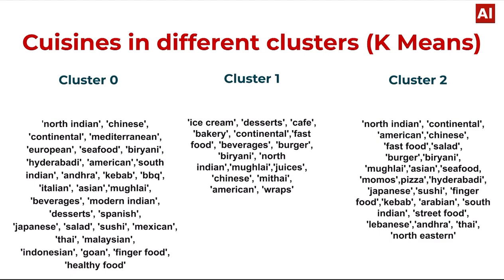Cuisines in different clusters: There are three clusters made by the K-Means algorithm. Cluster 0 contains North Indian, Chinese, Continental, seafood, biryani, Hyderabadi, American, South Indian, Andhra, Asian, and Mughlai cuisines. Cluster 1 contains ice cream, dessert, cafe, bakery, biryani, and burger fast food. Cluster 2 contains North Indian, Continental, American, fast food, salad, burger, and biryani.